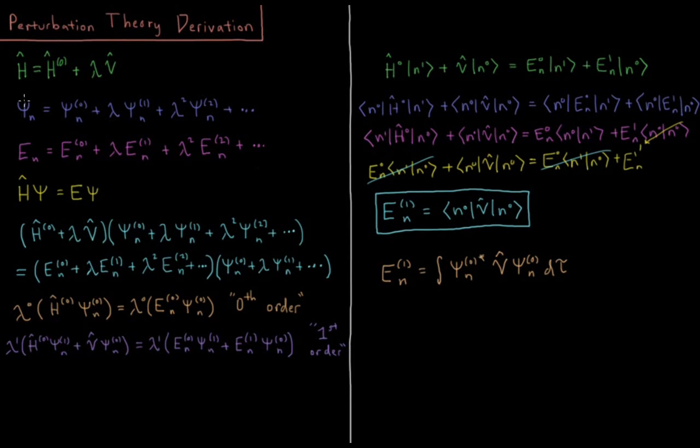So now, our wave function in perturbation theory is going to equal psi0 plus lambda psi1 plus lambda squared psi2, etc. So each increasing order, we get another power of lambda in our wave function. For EN, our energies of our wave functions, that's going to be the zero-order energy for that given quantum number, plus lambda times E1 plus lambda squared E2, etc., as it goes similarly as it did for the wave function.